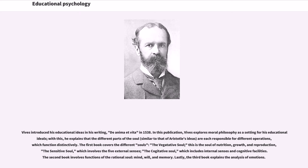Vives introduced his educational ideas in his writing De Anima et Vida in 1538. In this publication, Vives explores moral philosophy as a setting for his educational ideals, explaining that different parts of the soul are each responsible for different operations. The first book covers the vegetative soul (nutrition, growth, and reproduction), the sensitive soul (the five external senses), and the cogitative soul (internal senses and cognitive faculties). The second book involves functions of the rational soul, mind, will, and memory. The third book explains the analysis of emotions.